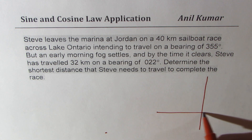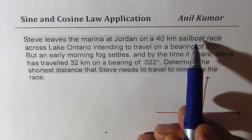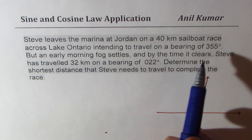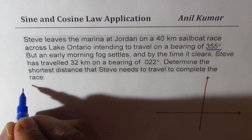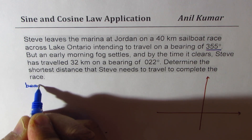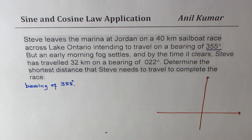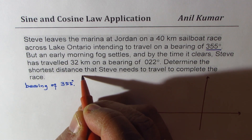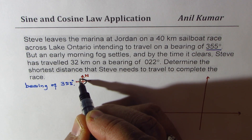Let's say that's our coordinate plane. We are given that Steve leaves on a 40 kilometer sailboat race, with a bearing of 355. Bearing of 355 means it is always measured from north — in our case, north is in this direction. So from north, it is a clockwise angle of 355 degrees, kind of like this — that type of angle.